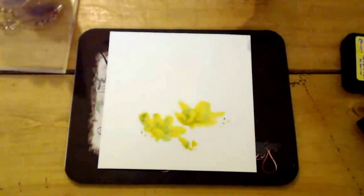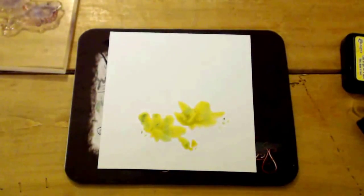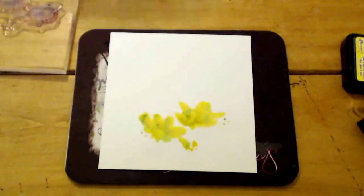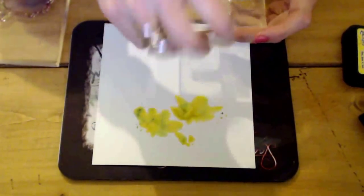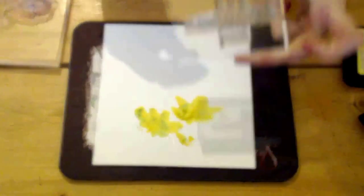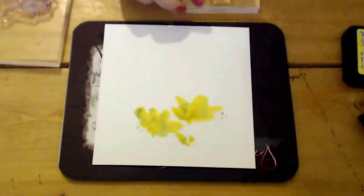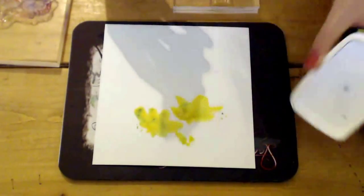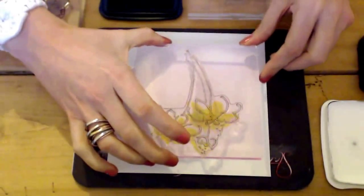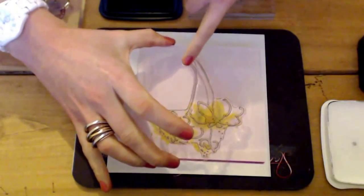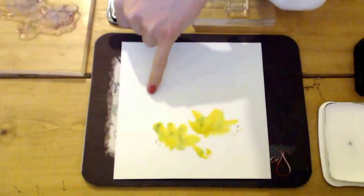So while that's drying then, I will get the happy birthday sentiment, which is this one here, and I'm just going to pop it on my block and we're going to stamp it in black. So I know when I come to put my outline on that my legs of my flower are going to be about here, so I need to stamp my image about here.